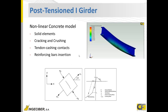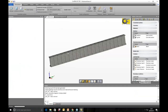This non-linear material model is combined with tendons modeled as cables, with the duct modeled as tubular beam elements. Contacts are defined between the cables inside the duct, and reinforcement bars are added using the insertion option since the reinforcement mesh does not need to match the solid element mesh.